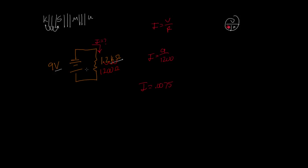Since we put in standard numbers, we get out a standard answer — amps. We need to find the most appropriate answer, so we go one, two, three decimal places to the right, giving us 7.5. We were in standard, and after moving three places we're in milli. So 7.5 milliamps — that is the smallest number greater than 1, so that's the best answer.